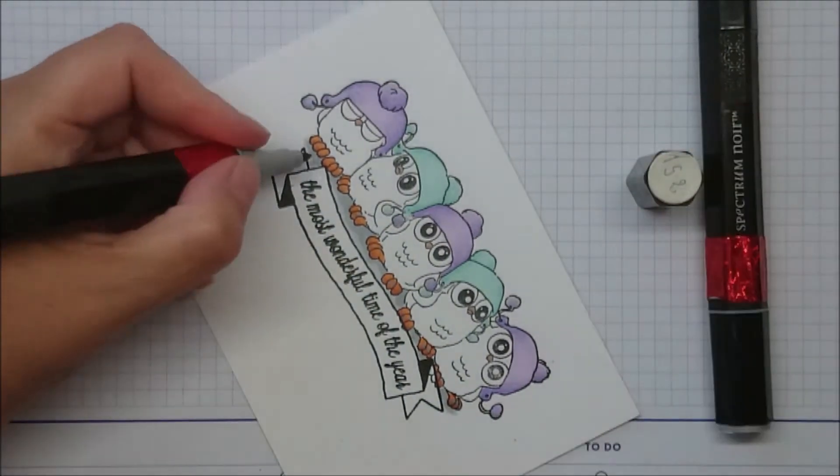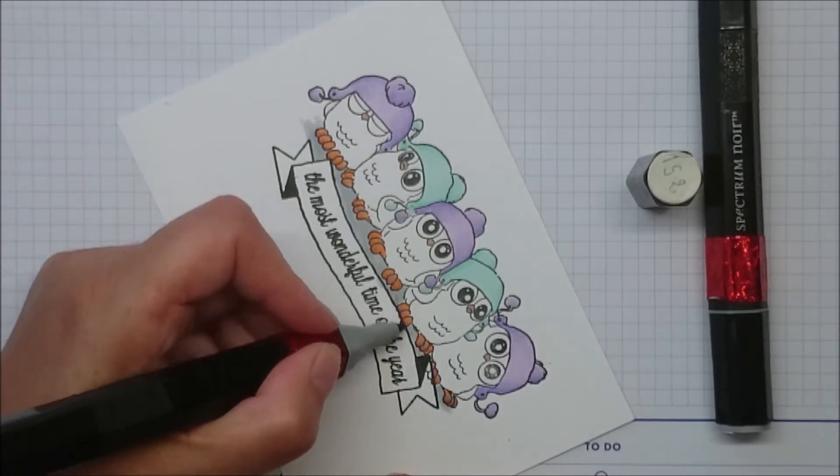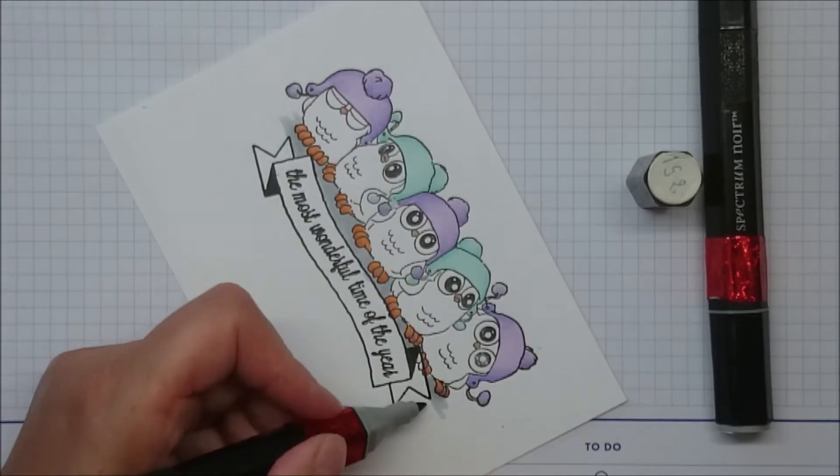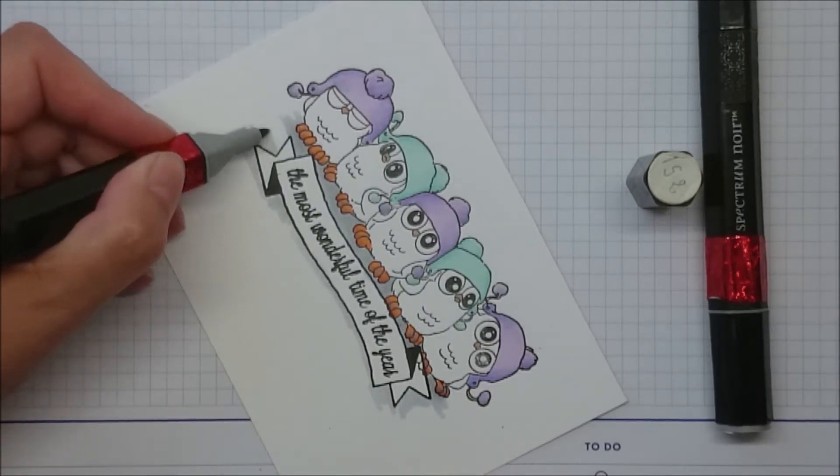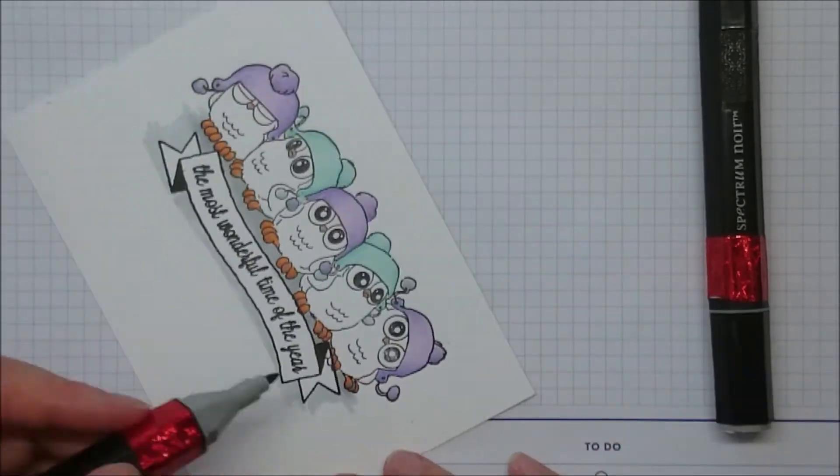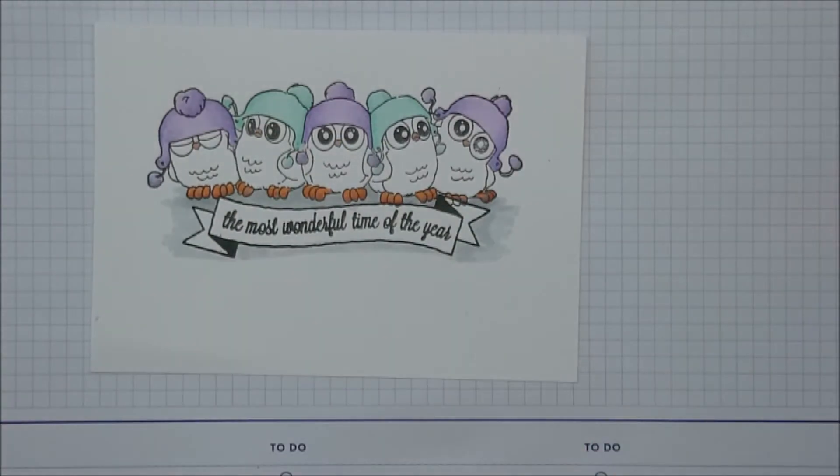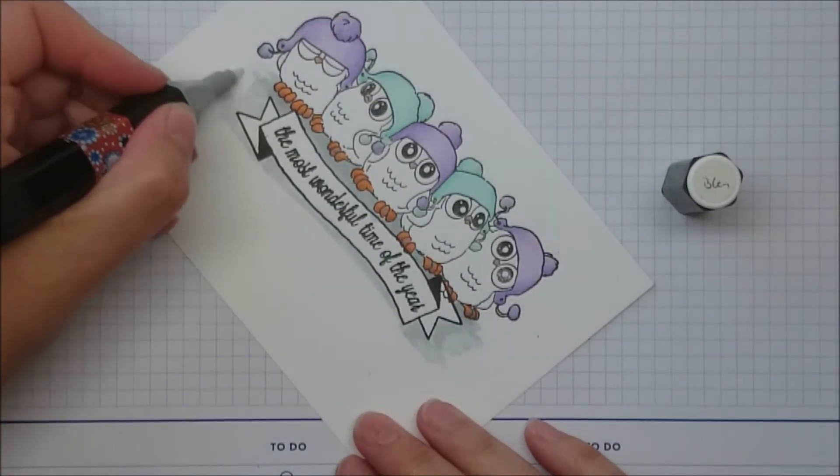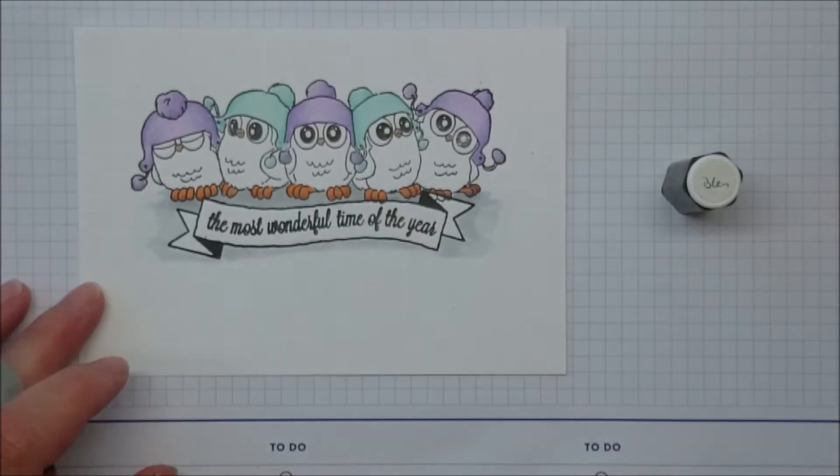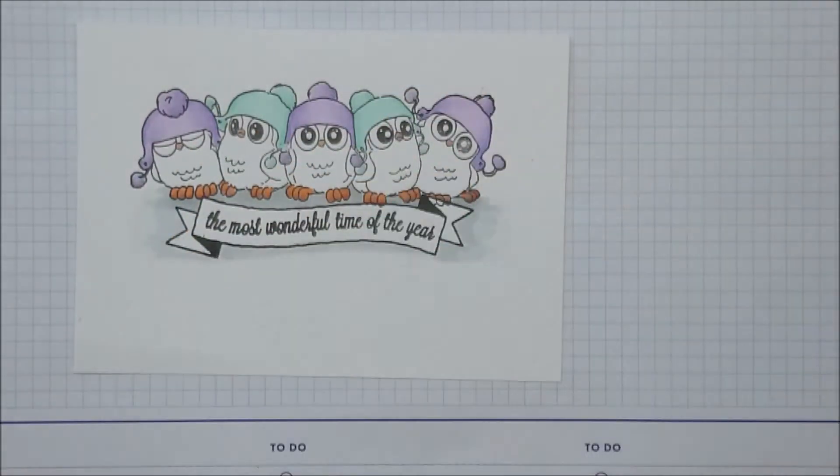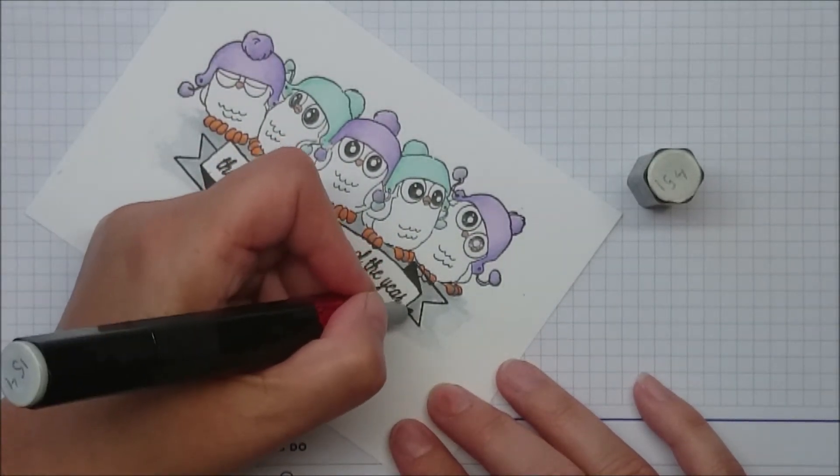And I didn't color the claw that's on the right, that's on the banner, which I probably should have instead of trying to disguise it. But yeah, I didn't. At this point I wasn't really sure where I was going with my coloring. I was just trying to make it one coherent piece. And I thought the banner would ground the owls and it would look nice if they seemed to be holding it.